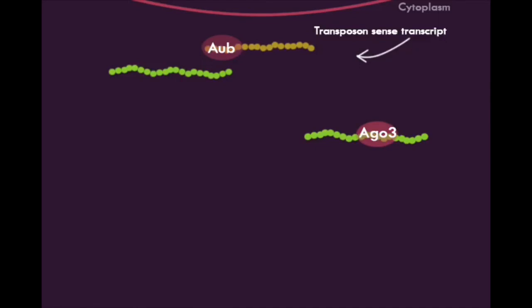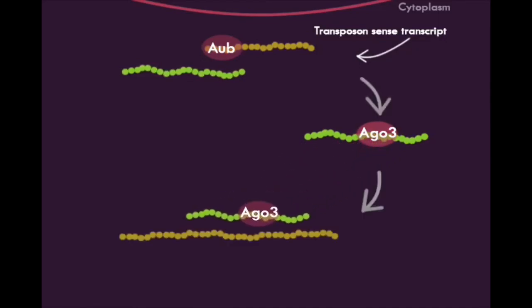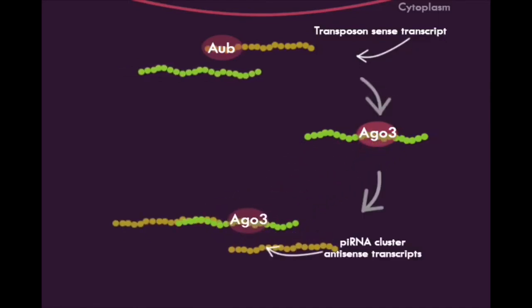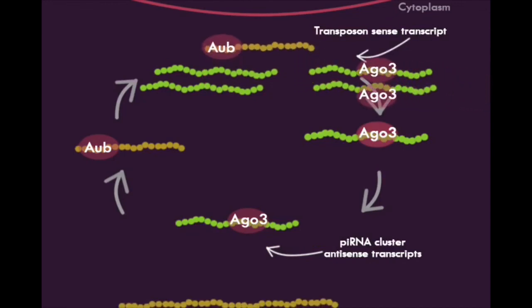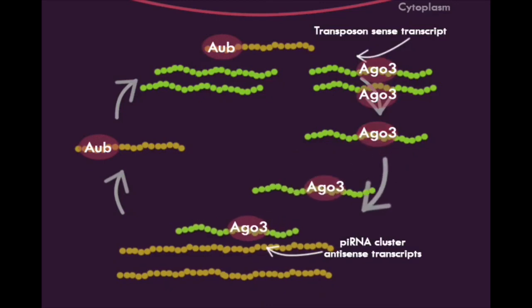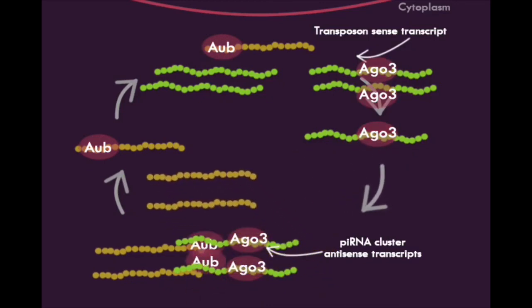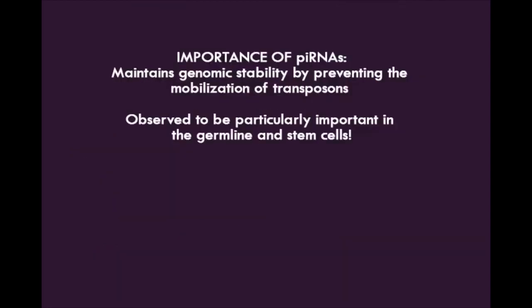This pathway allows for the amplification of PI-RNAs by having the Argonaute 3-associated PI-RNAs cleave and generate Aubergine-bound PI-RNAs, which can also cleave primary sense PI-RNAs to produce Argonaute 3-associated PI-RNAs. This ping-pong pathway allows the PI-RNA signal to be amplified so that there are more PI-RNAs to induce silencing.